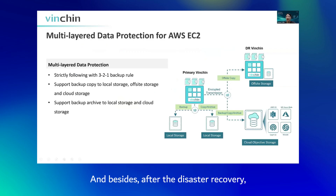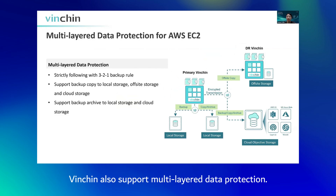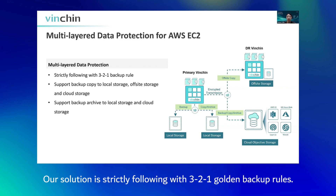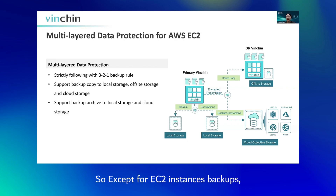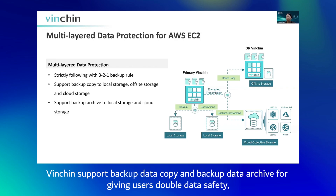Besides, after the disaster recovery, or for AWS EC2 protection itself, our solution also supports multi-layered data protection. Because our solution strictly follows the 3-2-1 golden backup rule. So in addition to instance backups, you can also perform backup data copy and backup data archive, giving users double data safety.